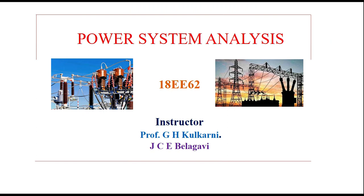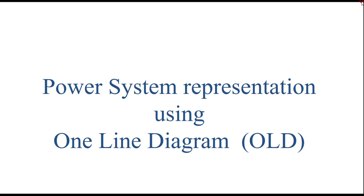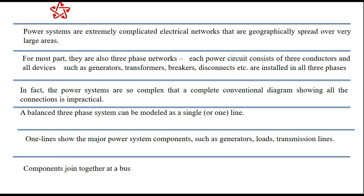In this session, we will explore the importance of the single-line diagram, or one-line diagram, of the power system. Power systems are extremely complicated electrical networks because they are spread over geographically very large areas. Most of these are three-phase networks — the power system consists of generators, transformers, transmission lines, and distribution lines, all three-phase in nature.